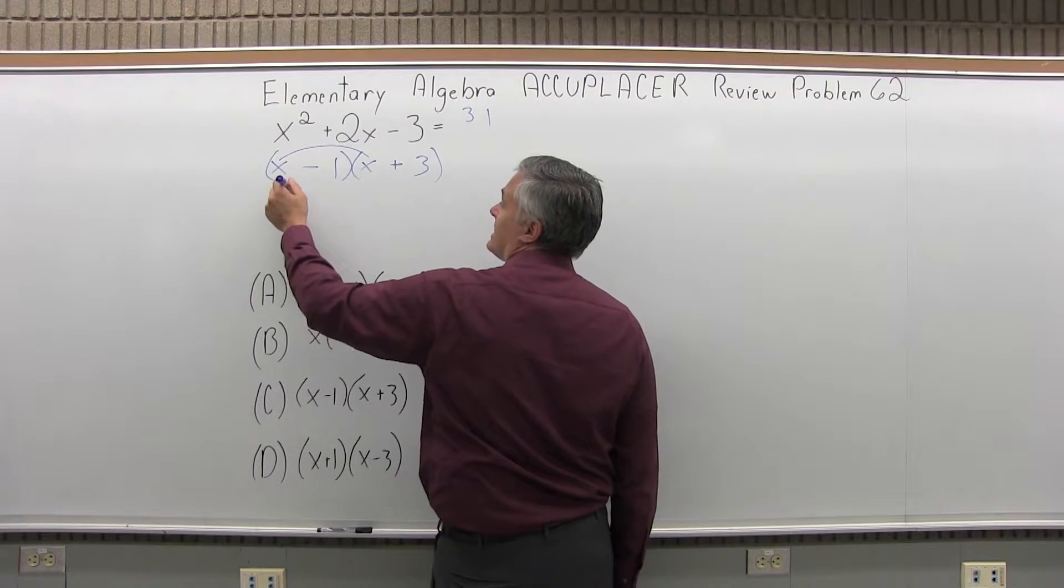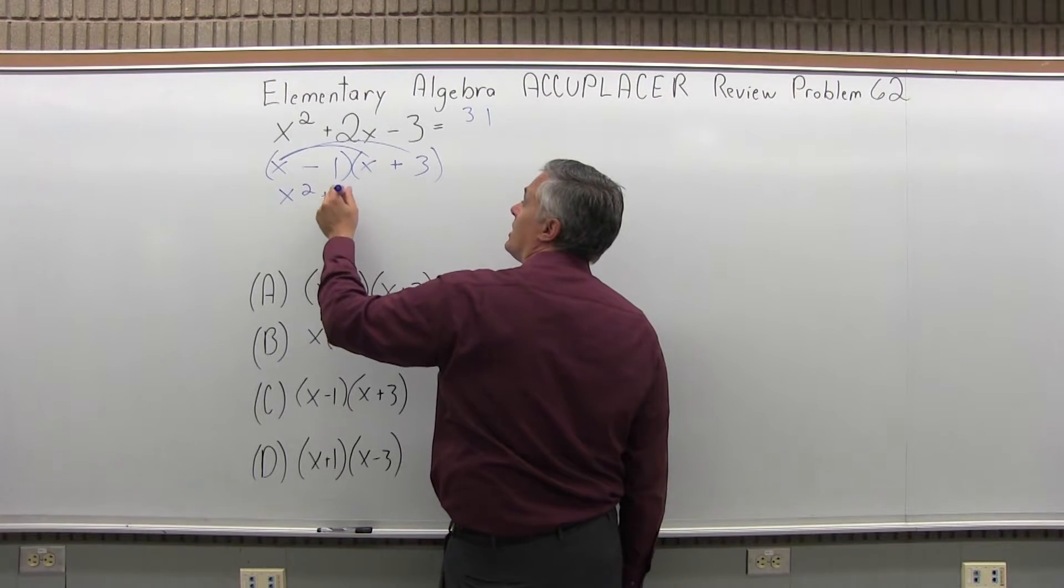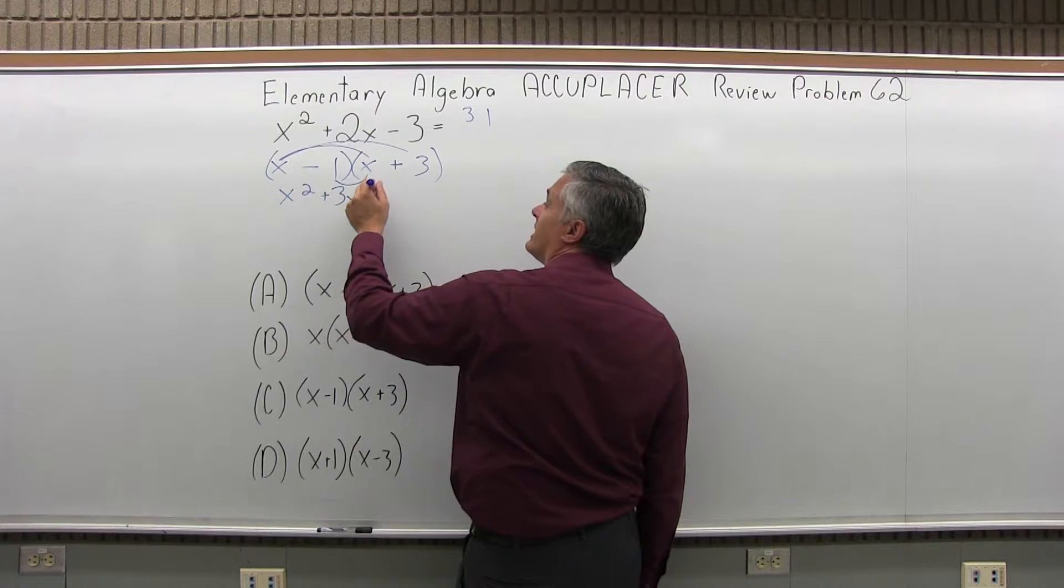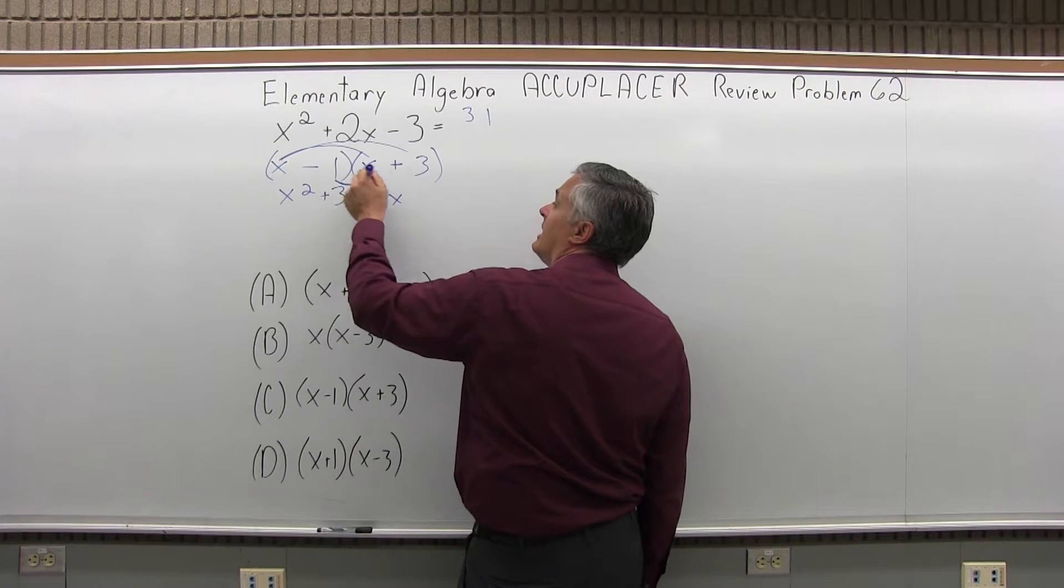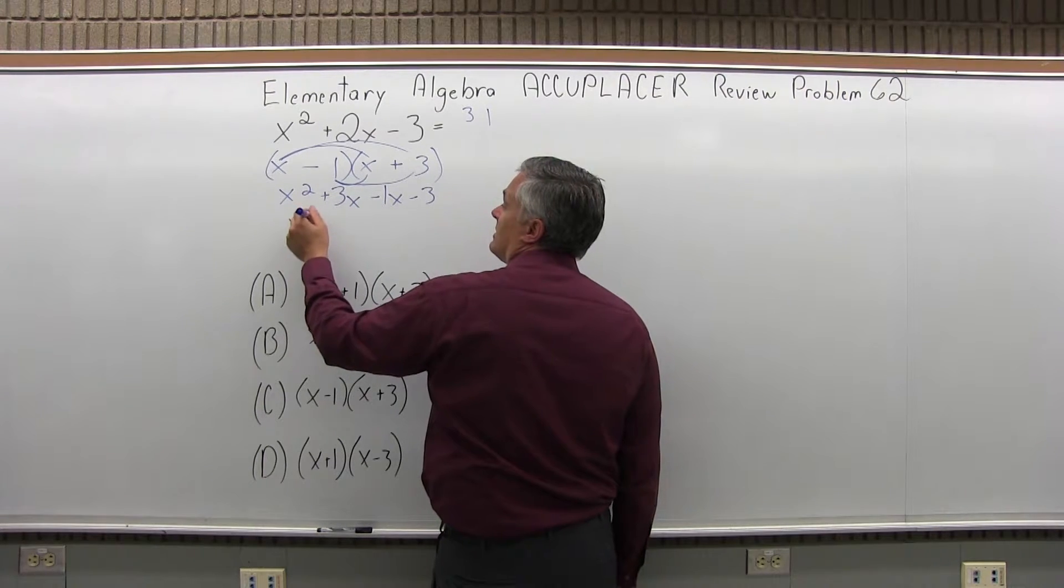So x times x is x squared. X times positive 3 is positive 3x. Negative 1 times x is negative 1x. And negative 1 times 3 is minus 3. If I combine the two terms in the middle,